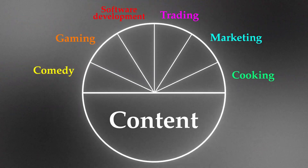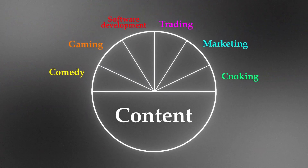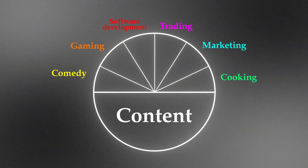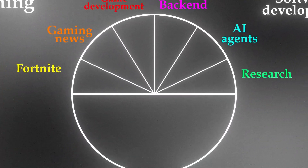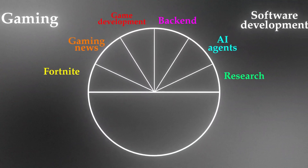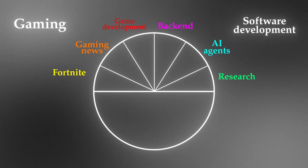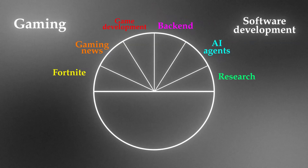Think of all the different content in the algorithm — gaming, software development, trading, marketing, cooking, et cetera. Zooming into gaming and software development, you can see these sub-niches inside. Fortnite is on one end, AI research on the other, and in between you have game development and backend.